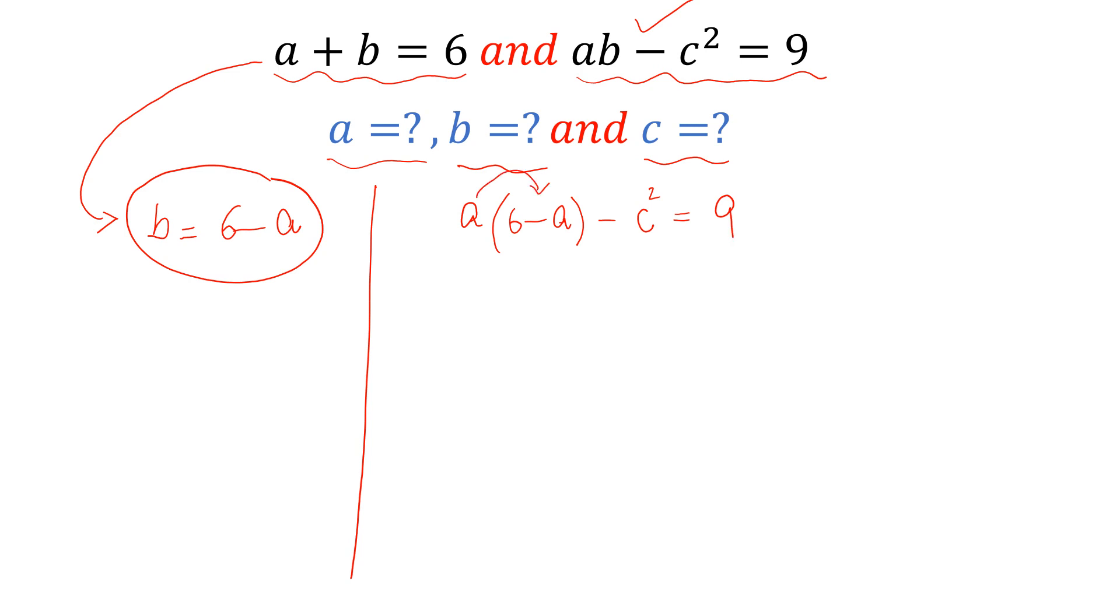Multiply A with this. So we can write it 6A minus A square minus C square and minus 9 is equal to 0.